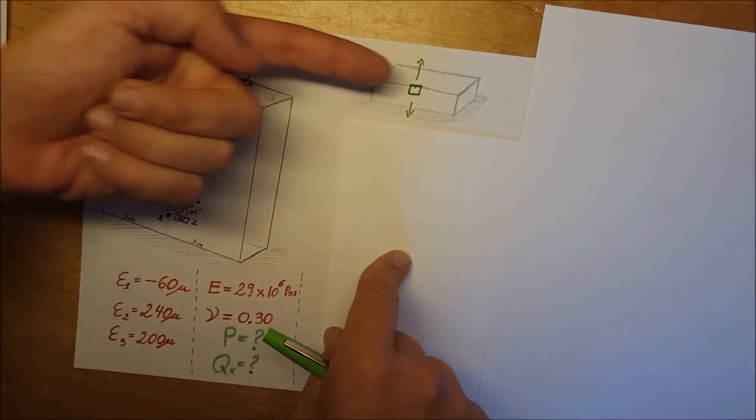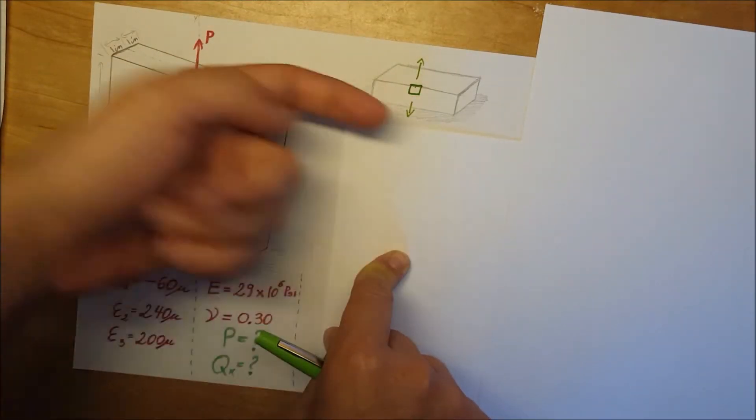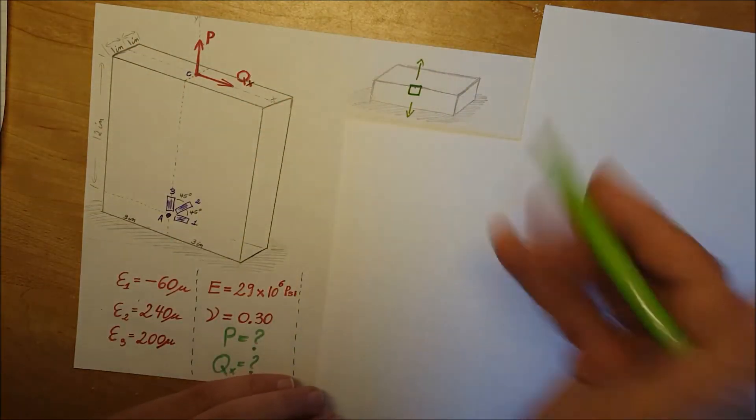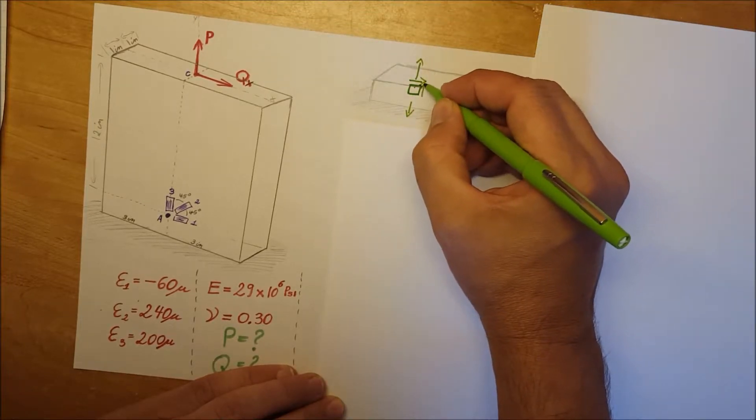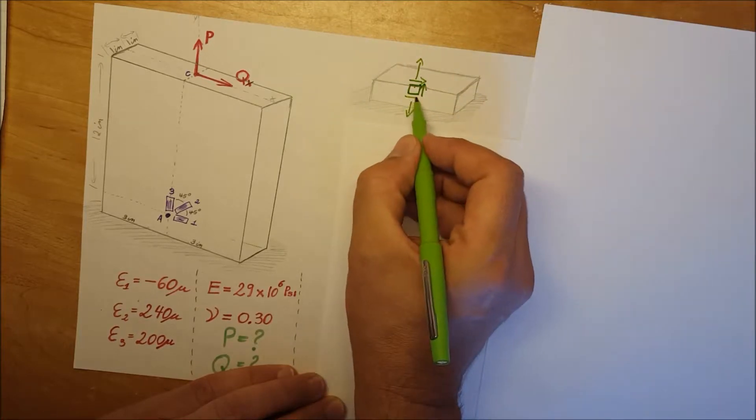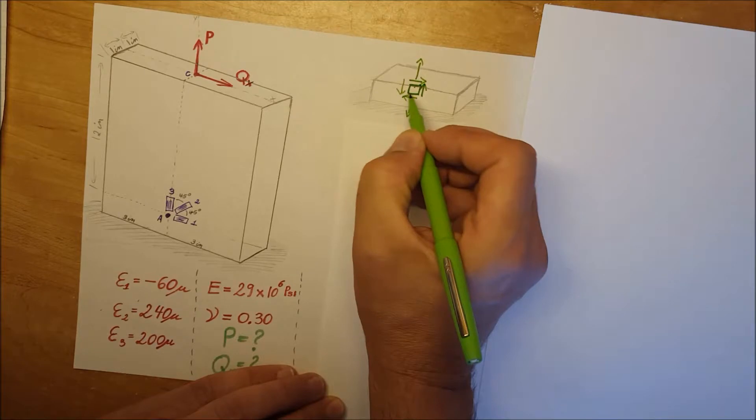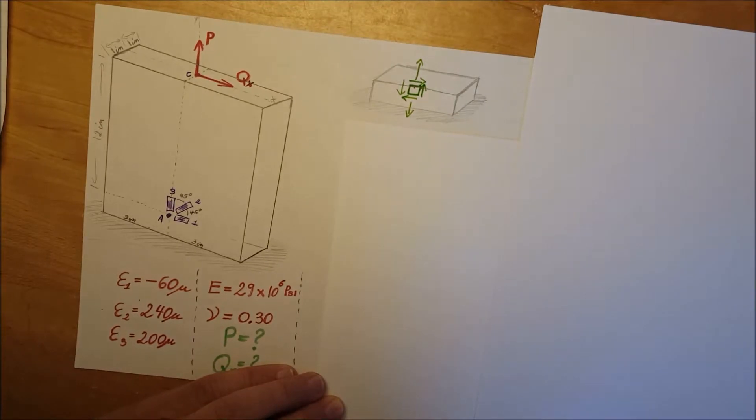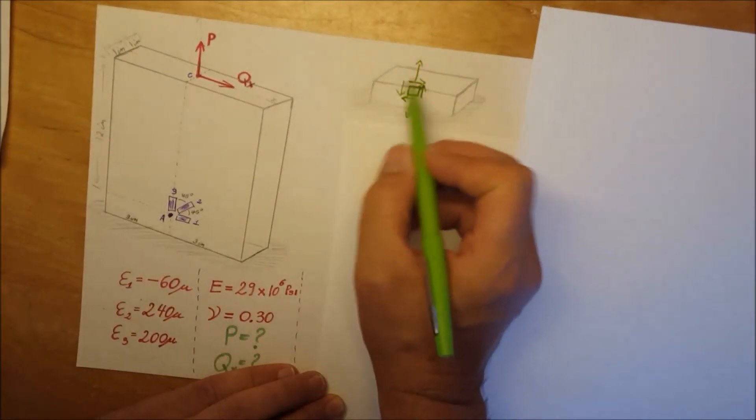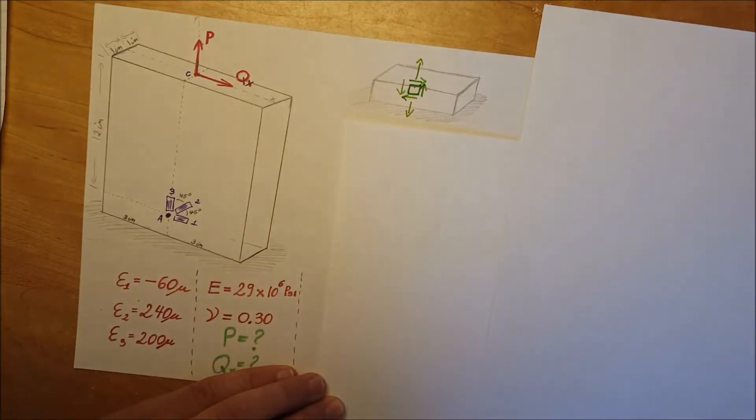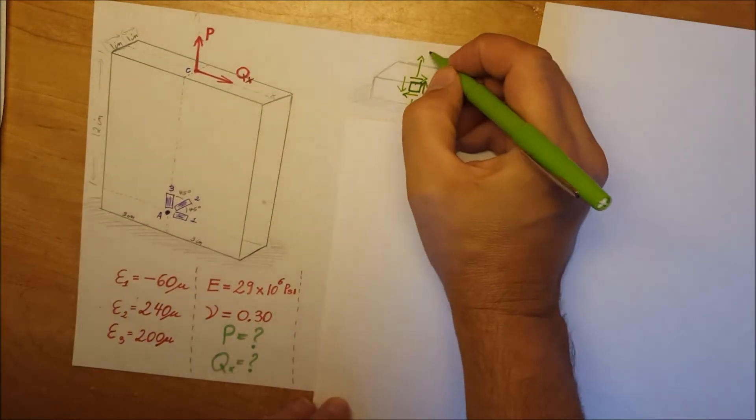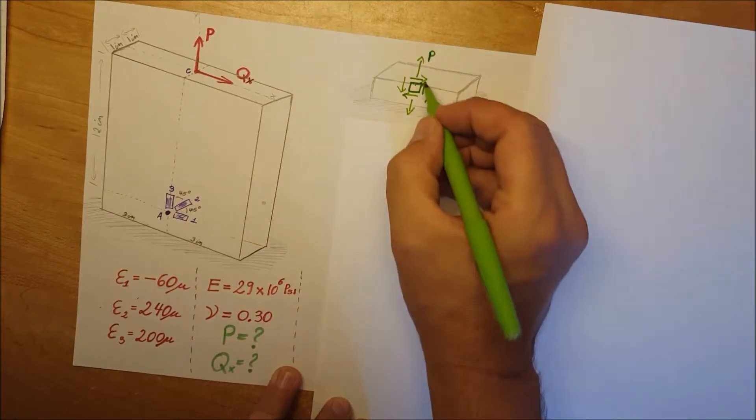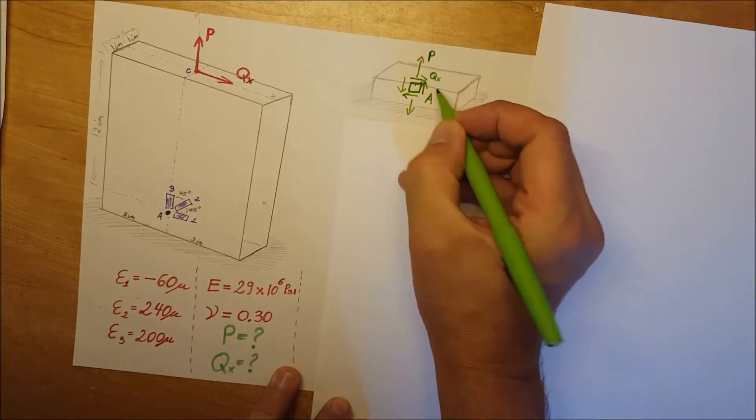This Qx is pushing the top of our square, pushing it this way. Therefore we can mark that we have a shear stress this way. Let's write up all the other components that would come with a shear stress going in this direction—head to head, toe to toe. This is just how we write our state of stress. Now we can tell how the stress is structured in this material at point A.